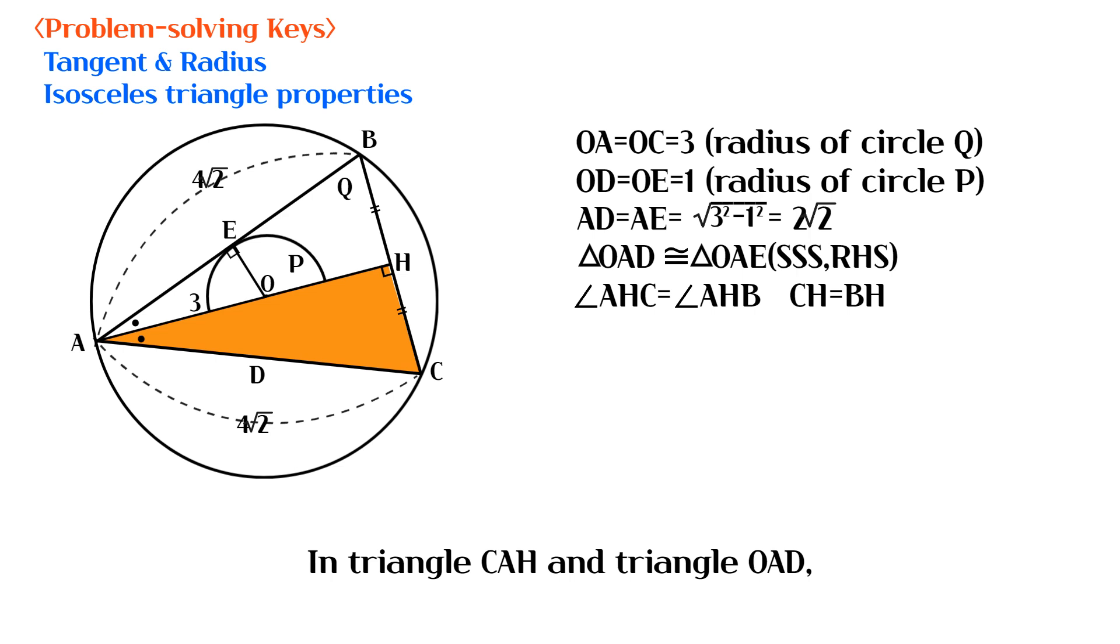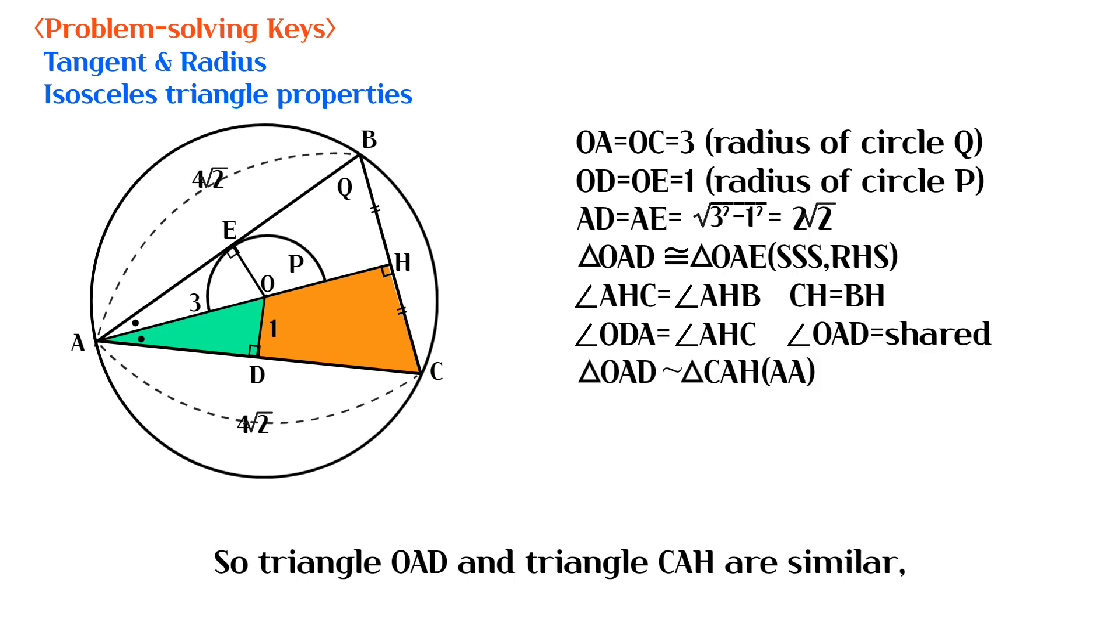In triangle CAH and triangle OAD, two corresponding angles are equal. So triangle OAD and triangle CAH are similar, and the ratio of similarity is 3 to 4 square root of 2.